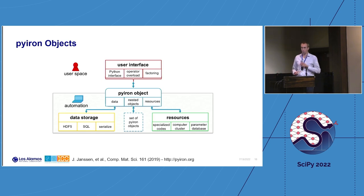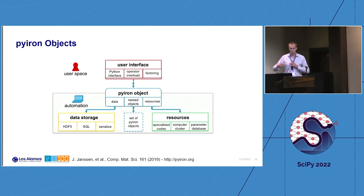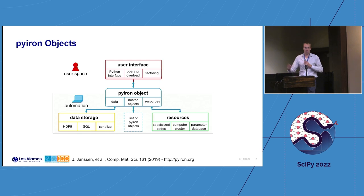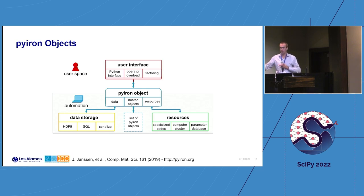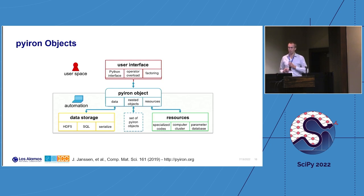We implement this based on an object-oriented approach — what we call Pyron objects. All objects are connected to three interfaces: the user interface, Python operator overloading so you can add objects together, and factory patterns so one object type creates others. These objects connect to resources — specialized DFT codes, computing clusters, parameter databases like the potential database from the last talk — and to data storage using HDF5 for large NumPy arrays and SQL to store dependencies. Objects can be serialized: you can save an object, transfer it to a cluster, reload it, and get exactly the same state.